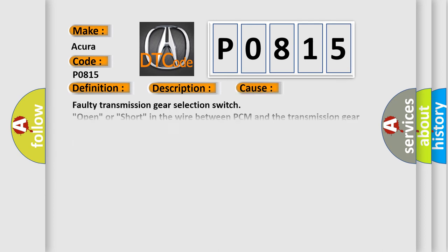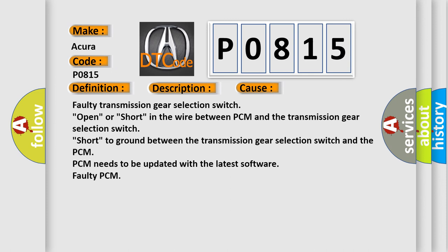This diagnostic error occurs most often in these cases: Faulty transmission gear selection switch, open or short in the wire between PCM and the transmission gear selection switch, short to ground between the transmission gear selection switch and the PCM, faulty transmission PCM needs to be updated with the latest software, or faulty PCM.